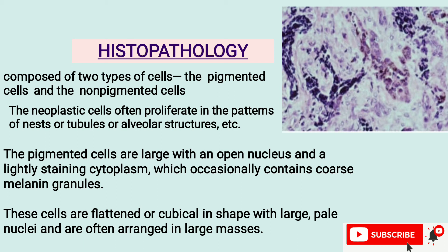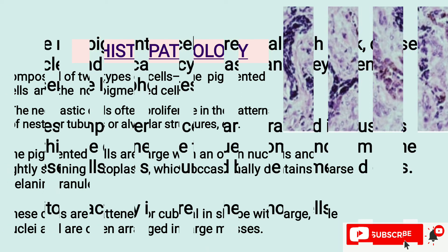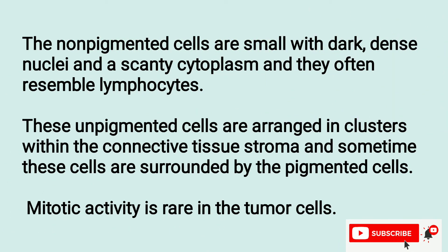Histopathology: two types of cells are seen — pigmented cells and non-pigmented cells. Pigmented cells are smaller; they have a dense nucleus, scanty cytoplasm, and they often resemble lymphocytes. Non-pigmented cells have lightly stained cytoplasm and occasionally contain melanin granules.